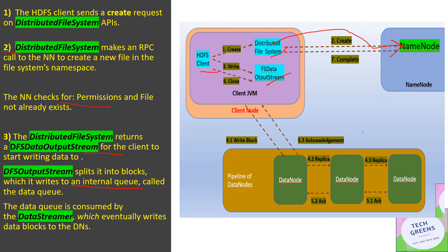The internal queue of the output stream is called the data queue. Each block is written to the data queue, and the consumer of the data queue is the data streamer, which eventually performs the write operation on the first DataNode. So the data streamer is the consumer of the data queue where the split file blocks are placed, and it is the one responsible for actually performing the writes on the first DataNode.